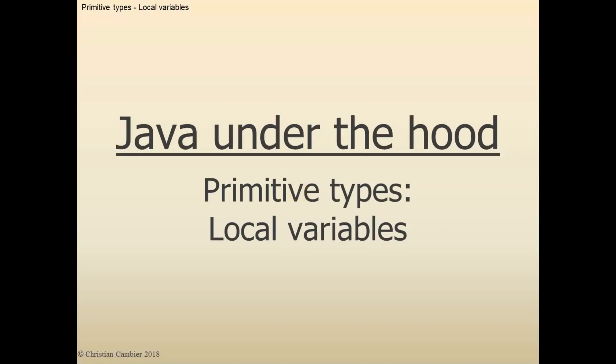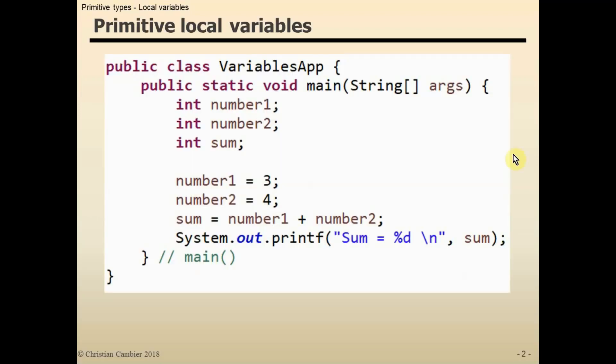Welcome to this first demo of Java Under the Hood, in which I'll demonstrate the use of local variables of a primitive type. I'll do that by demonstrating the following code. Here we have a small class with just one method, the main method.